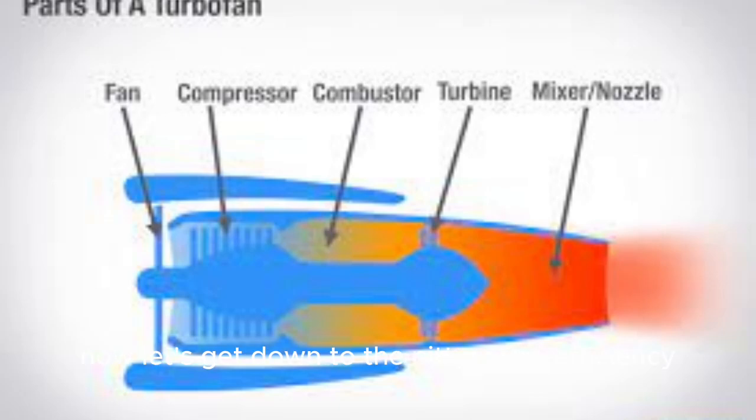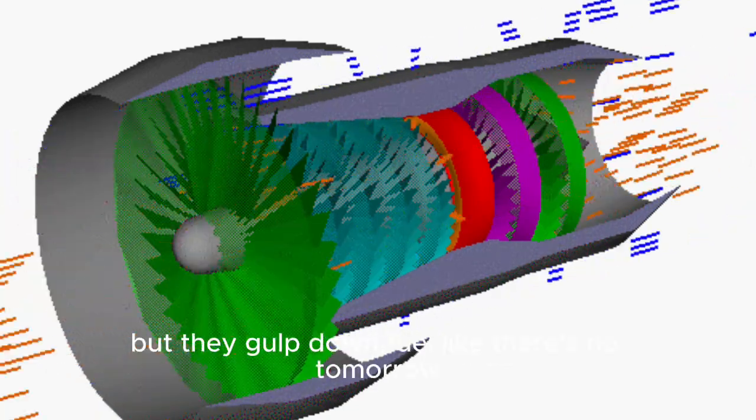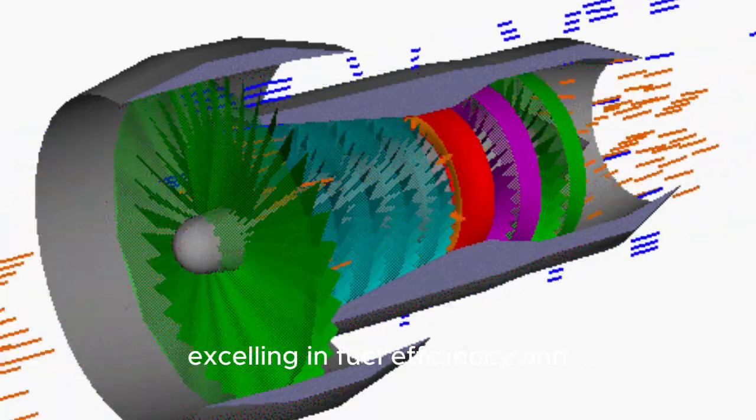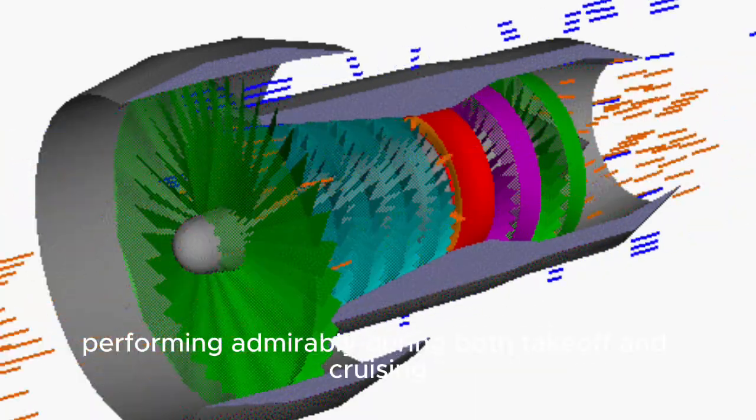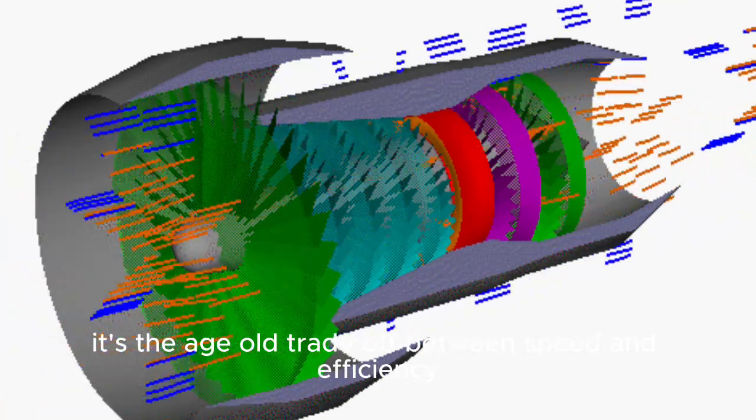Now, let's get down to the nitty-gritty efficiency. Turbojets are like sprinters, great for high speeds at high altitudes, but they gulp down fuel like there's no tomorrow. On the flip side, turbofans are the marathon runners, excelling in fuel efficiency and performing admirably during both takeoff and cruising. It's the age-old trade-off between speed and efficiency.